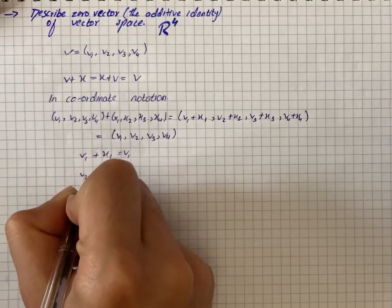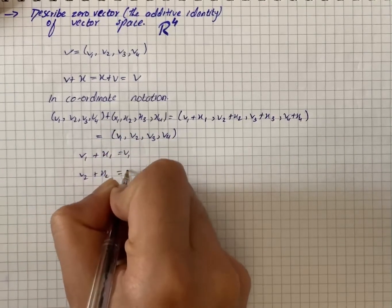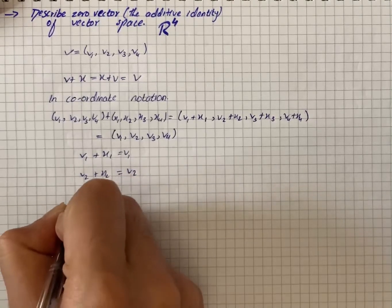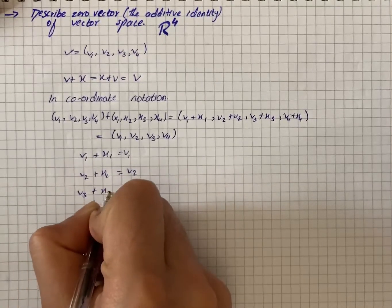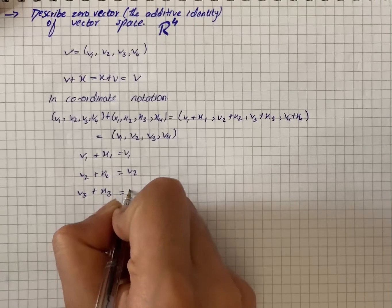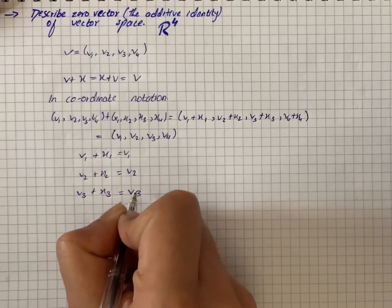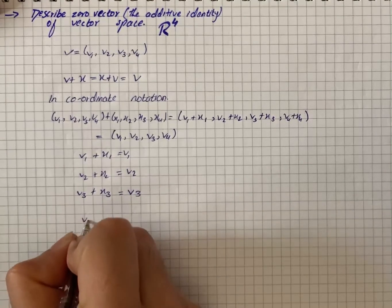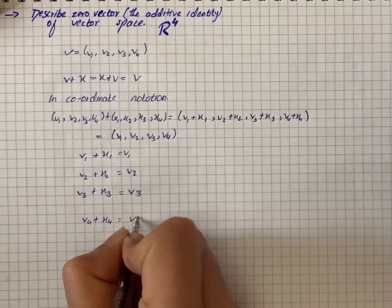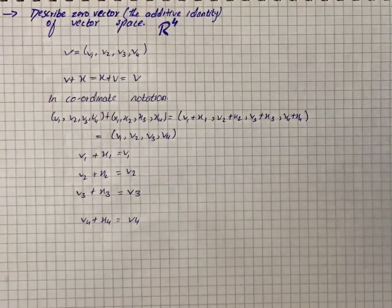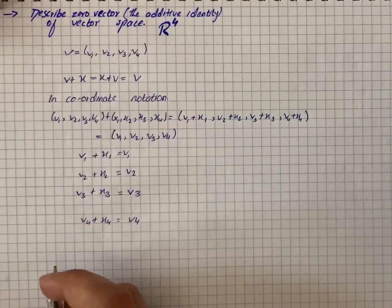V2 plus X2 equals V2, V3 plus X3 equals V3, and V4 plus X4 equals V4. From the properties of addition in R1, we know that...